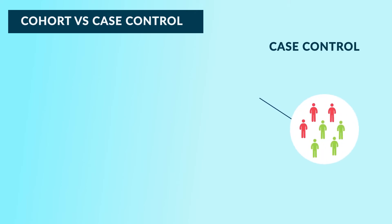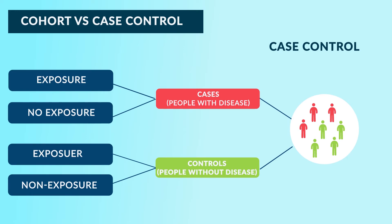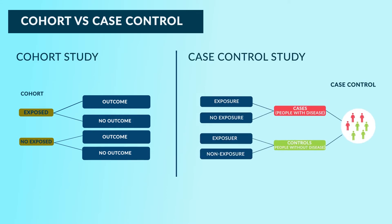Whereas in a case control study, the study groups are recruited based on the presence or absence of a disease or outcome. One group will be the diseased — the cases — and another group will be the controls or healthy people. You then look at how many in each group had the exposure or not. This is the key distinction: in a cohort study, groups are based on exposed or non-exposed; in a case control study, groups are based on presence or absence of disease. Case control and cohort terminology has nothing to do with the direction of the study, so don't mix these terms up with prospective and retrospective.